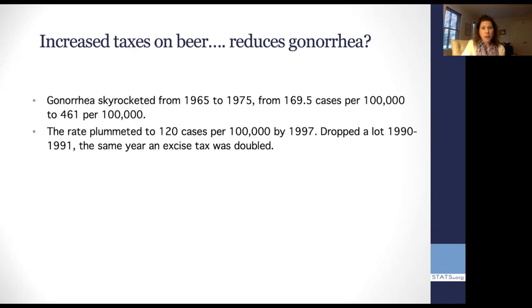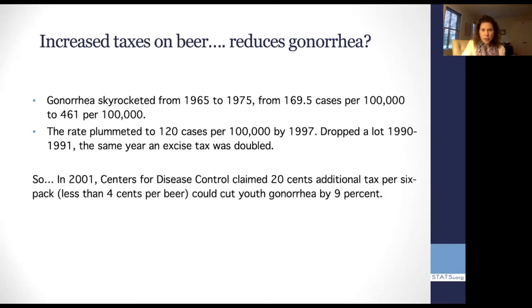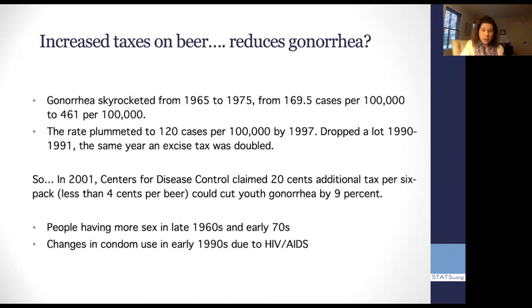Well, I'll tell you that what happened was a group of economists looked at gonorrhea rates, and they saw that it skyrocketed from 1965 to 1975 going from 169.5 cases per 100,000 to 461 per 100,000. The rate plummeted 20 years later, and it dropped a lot specifically in 1990 to 1991, which was the same year as an excise tax was doubled. So people came to the only obvious conclusion. In fact, the CDC came out and said that 20 cents additional tax per six pack, which was four cents a beer, would cut youth gonorrhea by 9%. And it seems like an absurd statement, especially if you knew anything about what was going on in the 1960s and 70s. There was a sexual revolution, and people were just doing it more. And then guess what happened in the 1980s, 1990s is HIV and AIDS came about, and people started really using condoms a lot. So in fact, it's very unlikely this was causal, but it was promoted by even our Centers for Disease Control as something causal.